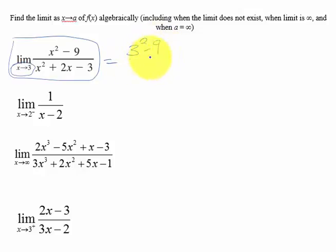So 3 squared minus 9 over 3 squared plus 2 times 3 minus 3. The numerator is actually going to be 0, but since the denominator is not—actually the denominator looks like it's 12—we're fine with it equaling 0. So the limit as x approaches 3 here of this function is 0.